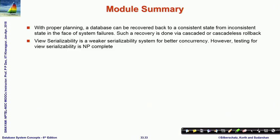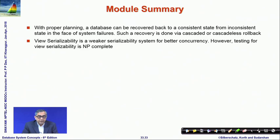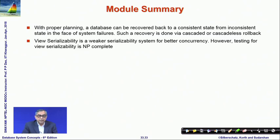In summary, with proper planning a database can be recovered back to a consistent state from an inconsistent state in case of system failure. Such recovery can be through cascaded or cascadeless rollback. We have also introduced view serializability as a simpler, weaker model — but testing for view serializability is NP-complete, so as an effective algorithm it is not that powerful.